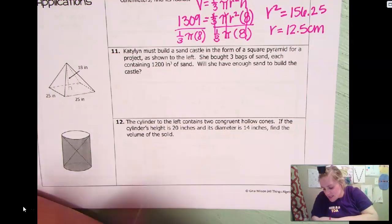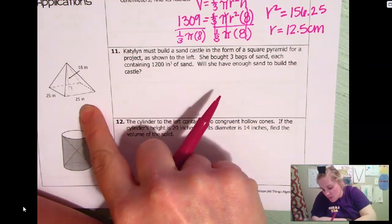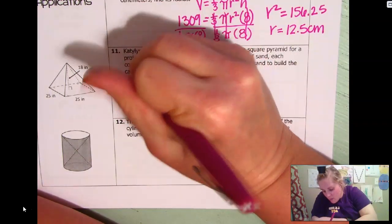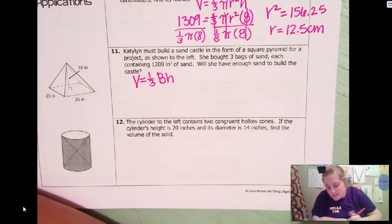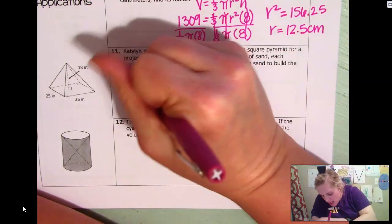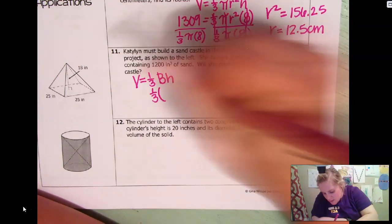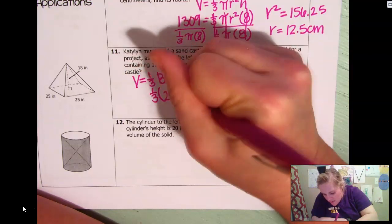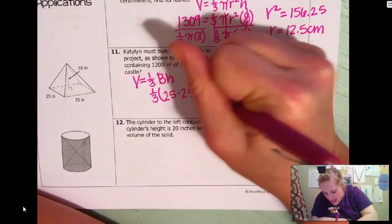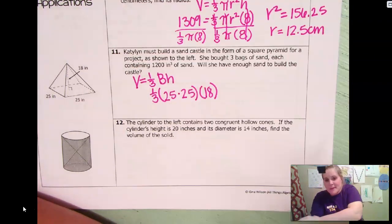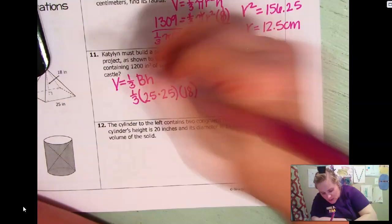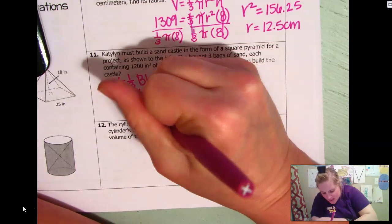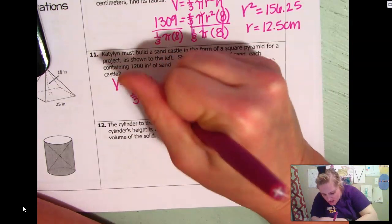So it is a square pyramid. So we're just going to have one third the base, big B, which is the area of the base times the height. So one third, the area of the base would just be 25 times 25. The height is 18. I'm going to type that in my calculator. Actually, I'm going to just look at the key. It's 3,750 inches cubed. Okay.